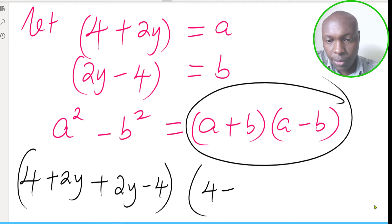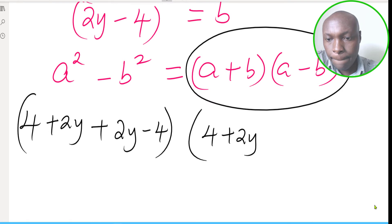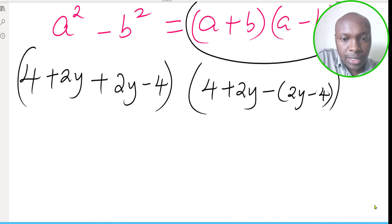a - b, a is (4 + 2y), then minus, you need to be very careful, you have to indicate that bracket so that you show that you're subtracting the whole of b. b is (2y - 4) like that.